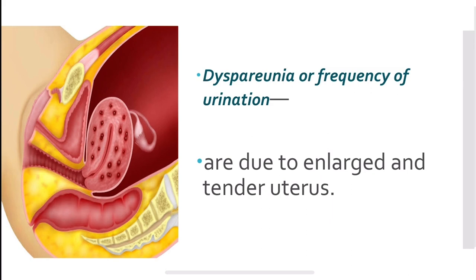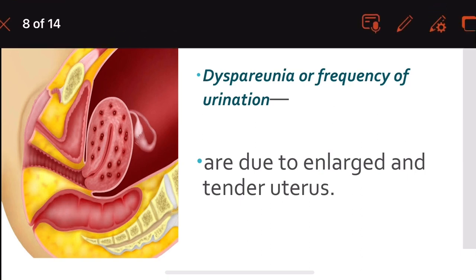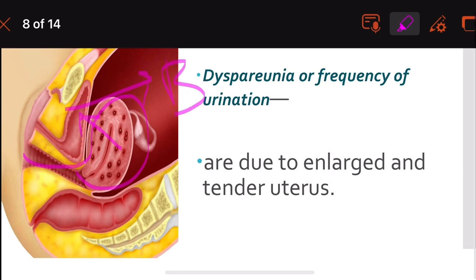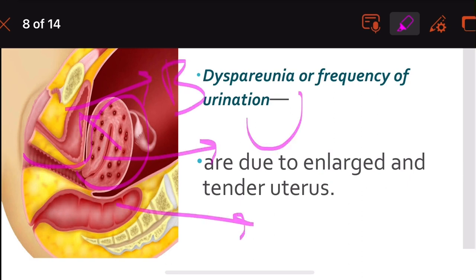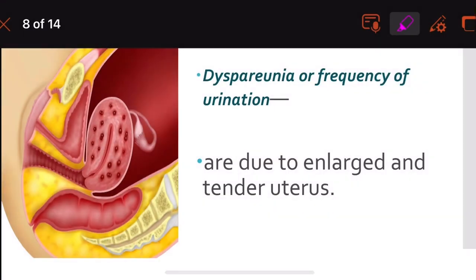Dyspareunia, or painful sexual intercourse, is also present due to the enlarged and tender uterus affecting the cervix and vagina. The enlarged uterus puts pressure on the urinary bladder, resulting in increased frequency of urination.